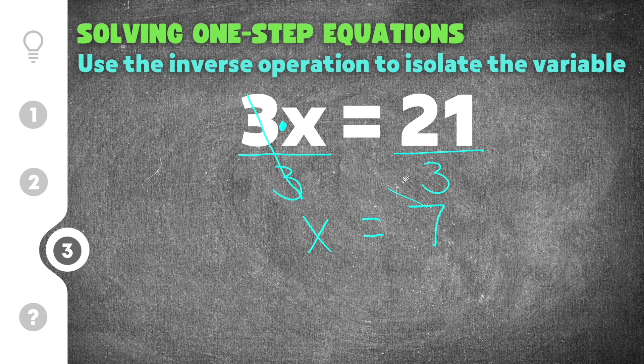And we can check that by taking 7 and substituting it in for x. So we're going to say 3 times 7 equals 21. 3 times 7 is 21, so 21 equals 21. I know that my solution of x equals 7 is correct.